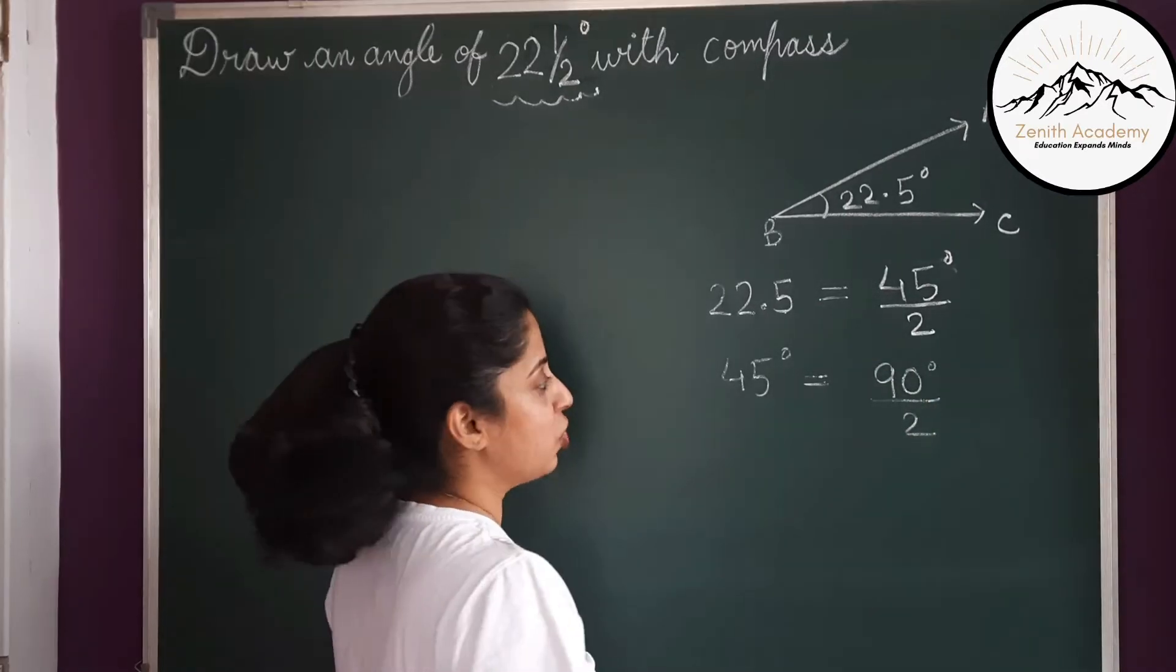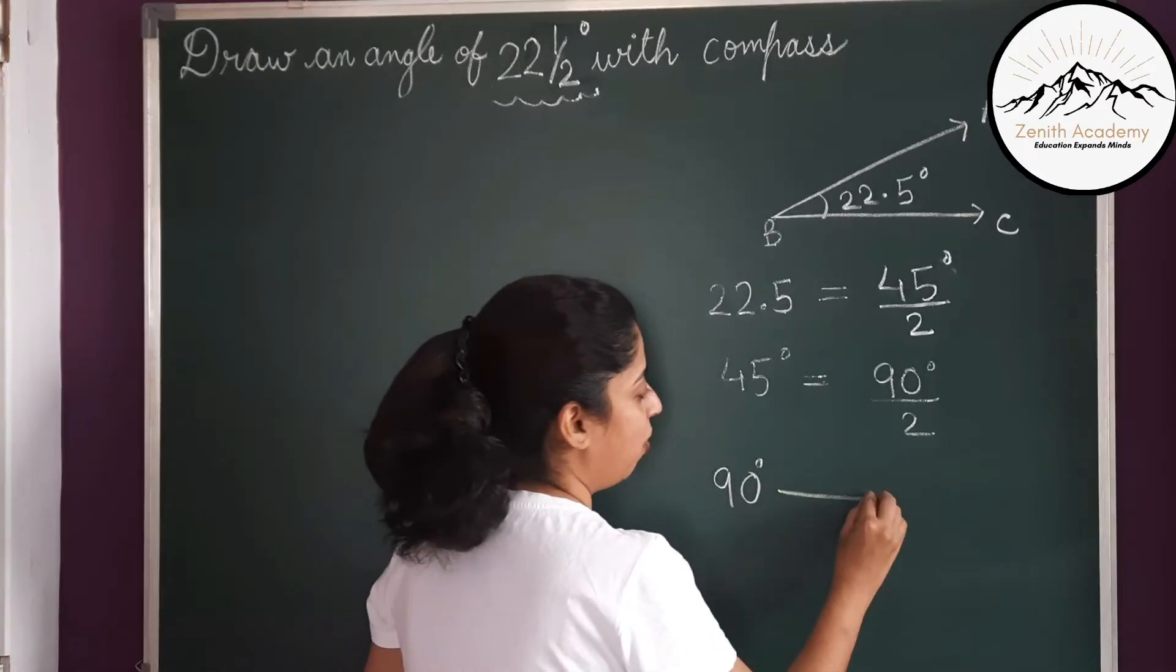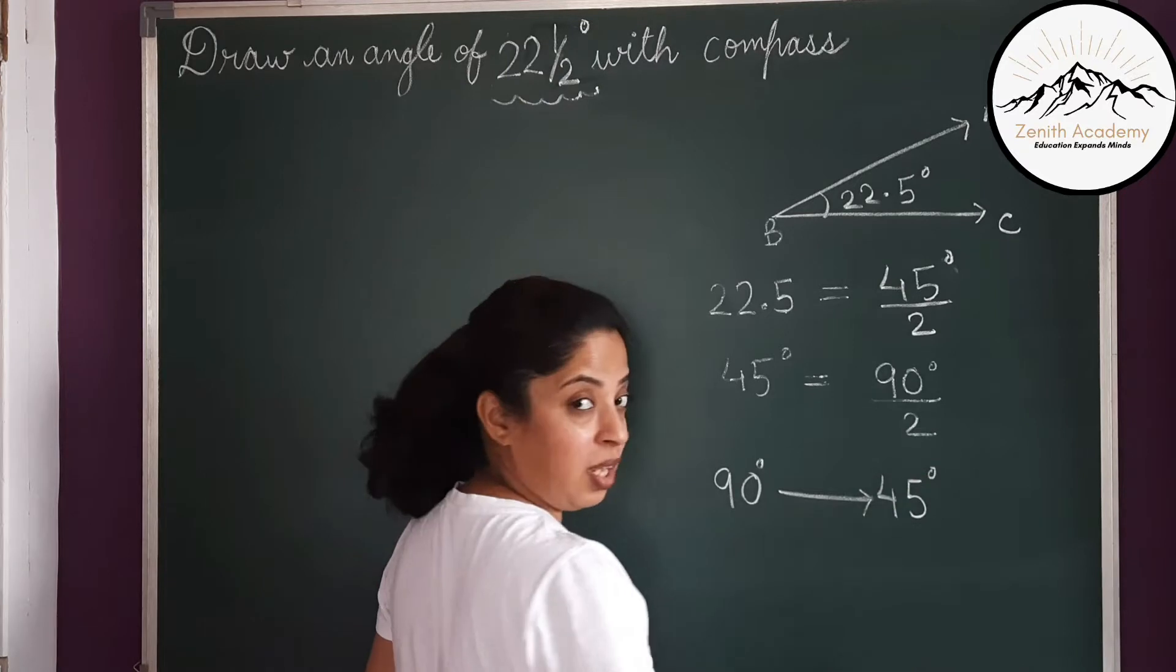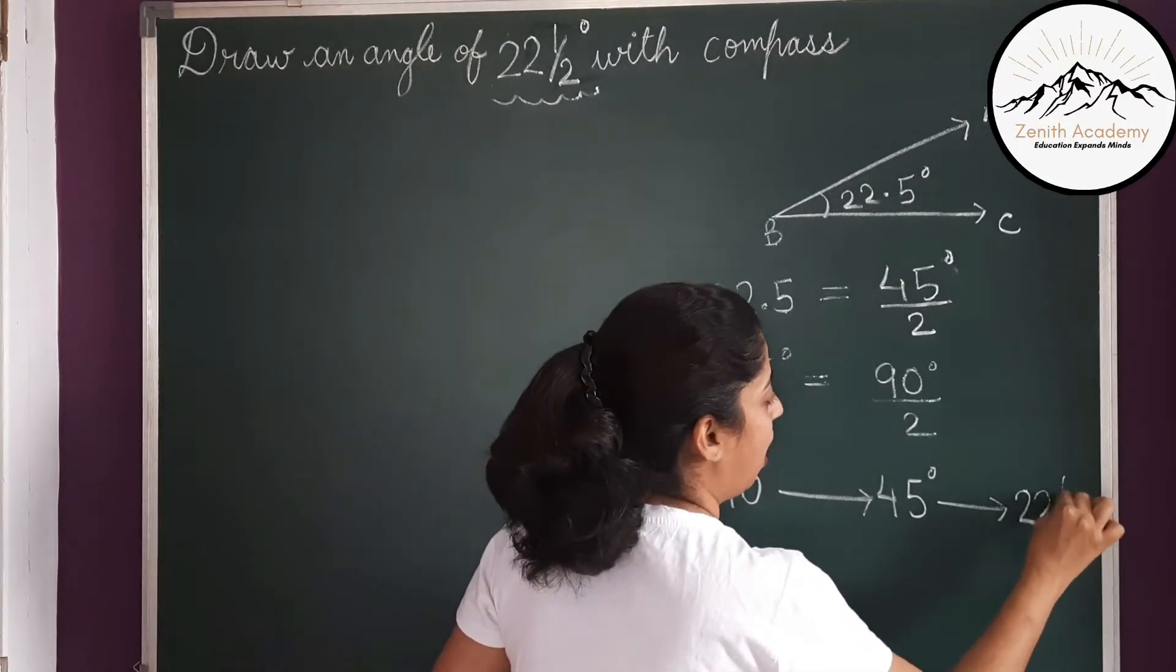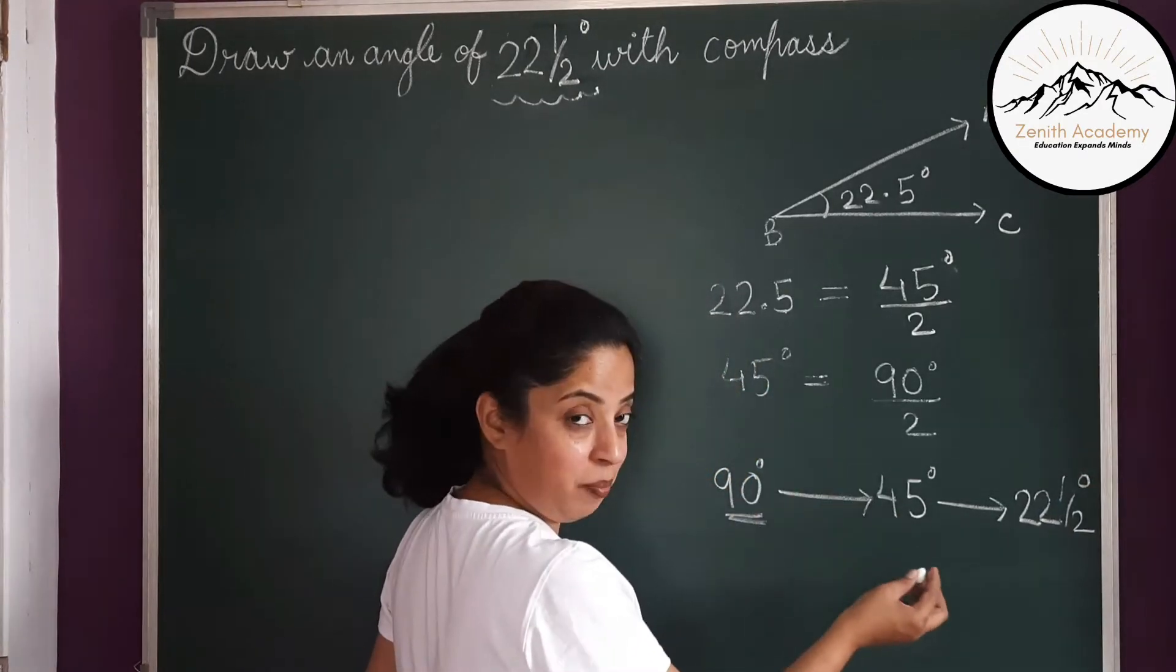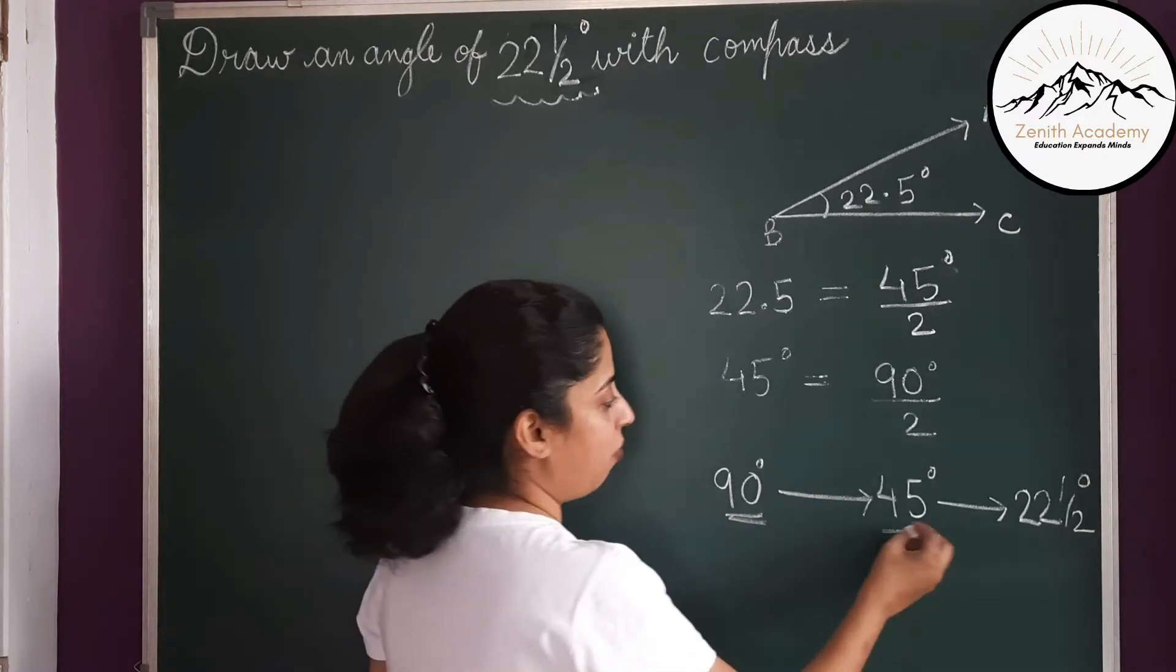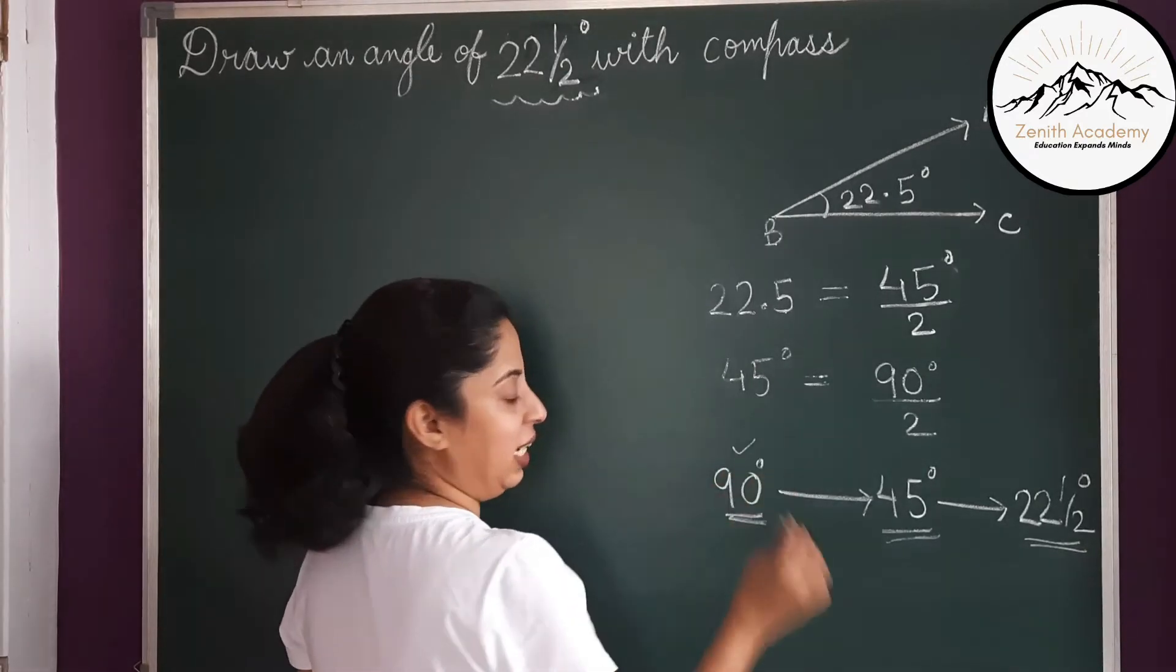So first you will have to draw a 90 degree angle. Then you have to bisect it and make 45 degree. Then again you have to bisect it and make 22.5 degree. So remember this: make a 90 degree, then bisect it, means divide the angle. So half of 90 is 45 and half of 45 is 22.5. So let's begin by drawing a 90 degree angle.